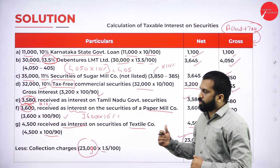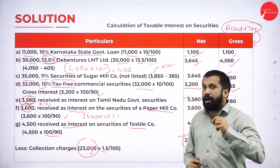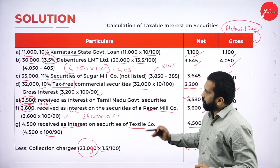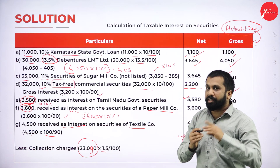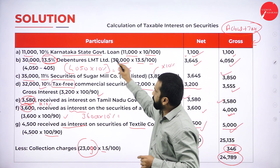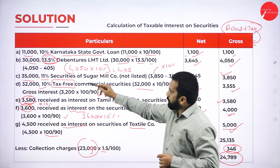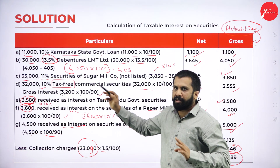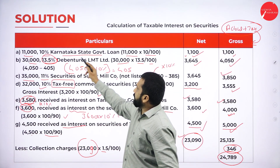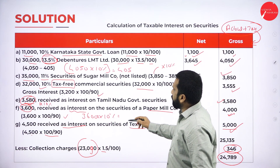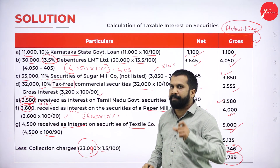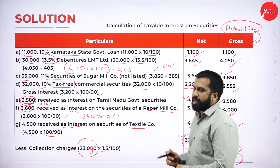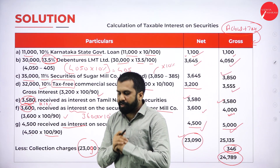By just looking at this solution you will not understand everything. After this session, sit and work out the problem one by one. Read the question, see whether interest is given as a principal with a rate or as a received amount. Remember: for Karnataka State Government or Tamil Nadu State Government securities, don't calculate — whatever amount is given, write it directly.